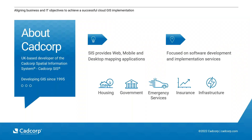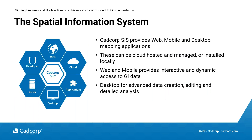CADCorp is UK-based and focused on the development and delivery of our product CADCorp SIS, which includes web, mobile and desktop GIS applications. We work across various sectors. CADCorp SIS — Spatial Information System — is our suite of GIS products covering web, mobile and desktop. These can be cloud-hosted and managed or installed locally if that's preferable. Web map and mobile provide interactive and dynamic access to geospatial data, and desktop provides more advanced GIS capabilities.